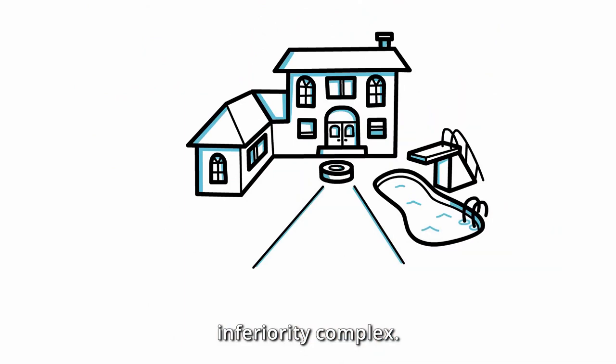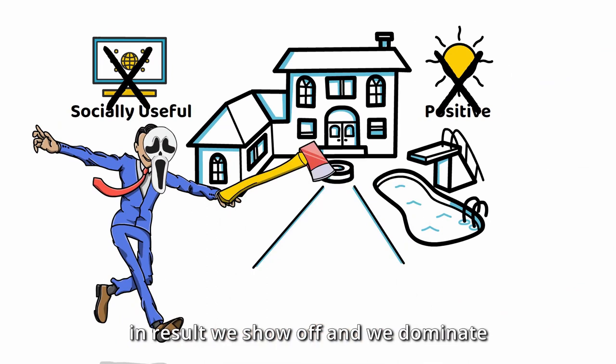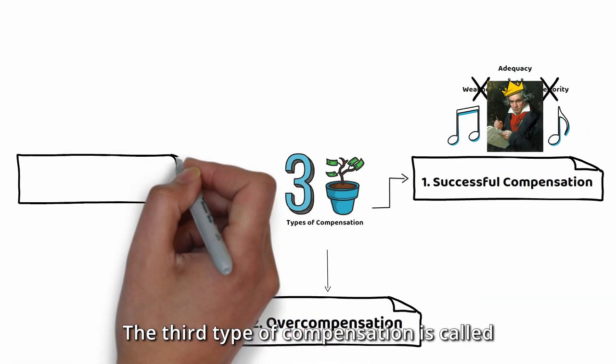If we cannot compensate in a positive and socially useful way, the inferiority feeling will be overwhelming, then we fake ourselves that we are super good. In result, we show off and we dominate other people.